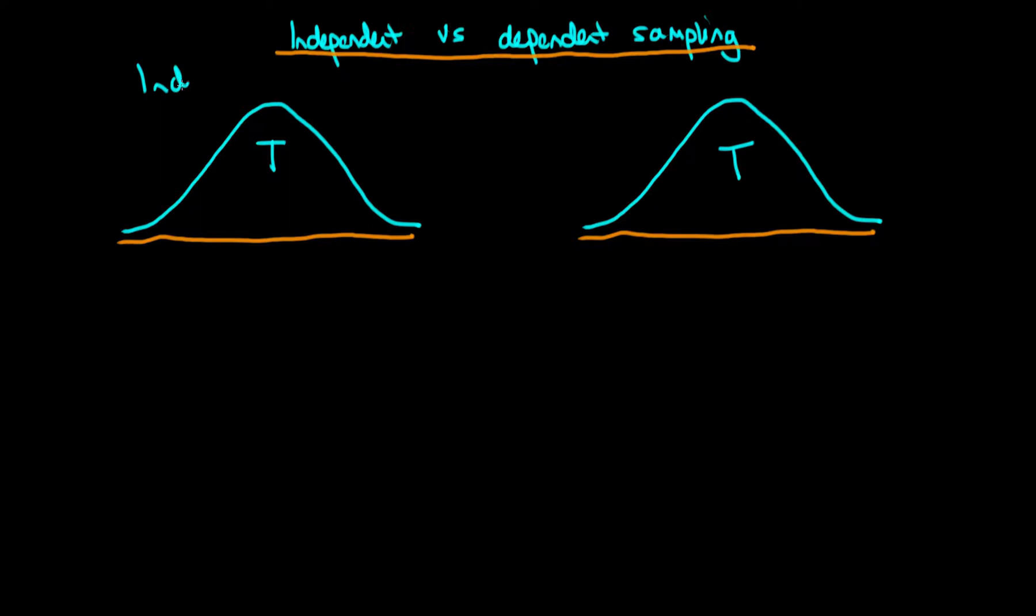If we think about the independent sampling case, we imagine we sample one value, for example this might be 1.3 from the distribution, then we sample another value and we might get a different value which is say 3.7.